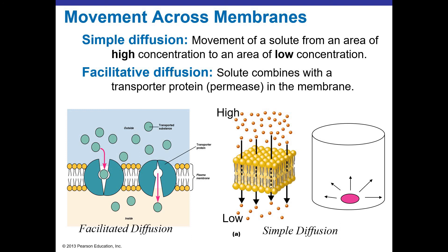In facilitated diffusion, the same principle occurs — things go from areas of high concentration to low concentration. But some substances can't get across the membrane on their own; they may be too large or charged and need help. The help comes in the form of a transporter protein, what we refer to as a permease, which allows things to go down their natural concentration gradient passively.